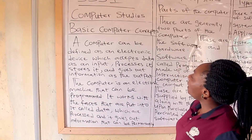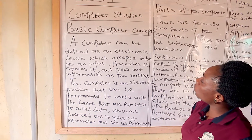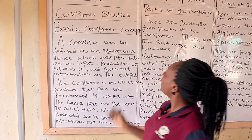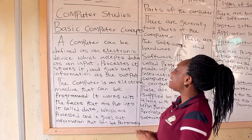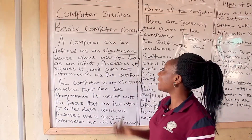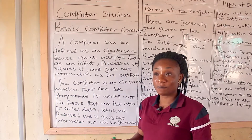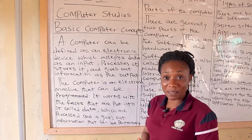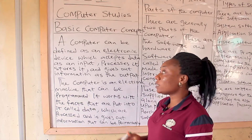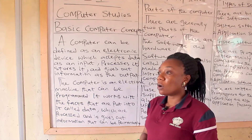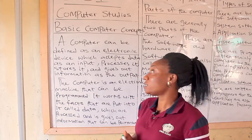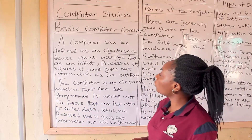Now, there are keywords I want us to look into. Number one is electronic. It simply means that a computer is a device that uses electricity to work — it cannot work without electricity. It's either electricity supplied by the mains, a generator, or a solar system. So it must use electricity to work or function.